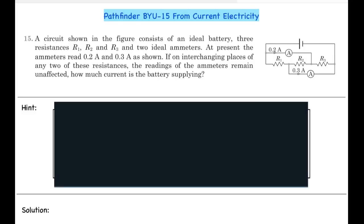Here we have question number 15 from the 'Build Up and Understanding' exercise of the chapter 'Current Electricity' from the book Pathfinder. A circuit shown in the figure consists of two ideal batteries, three resistances R1, R2, and R3, and two ideal ammeters. At present the ammeters read 0.2 ampere and 0.3 ampere as shown. If on interchanging places of any two of these resistances the readings of the ammeters remain unaffected, how much current is the battery supplying?